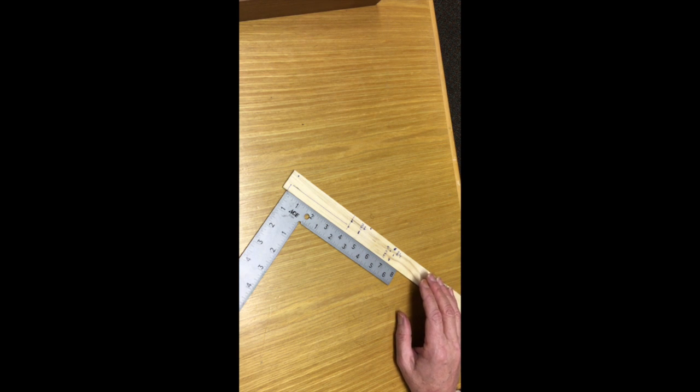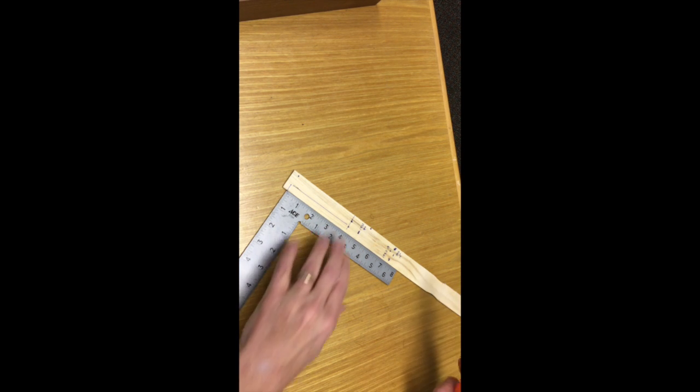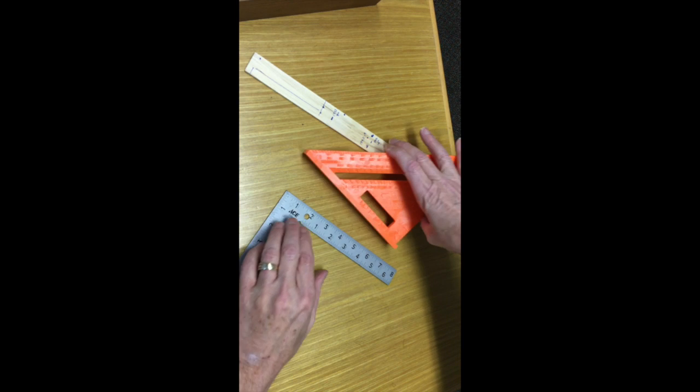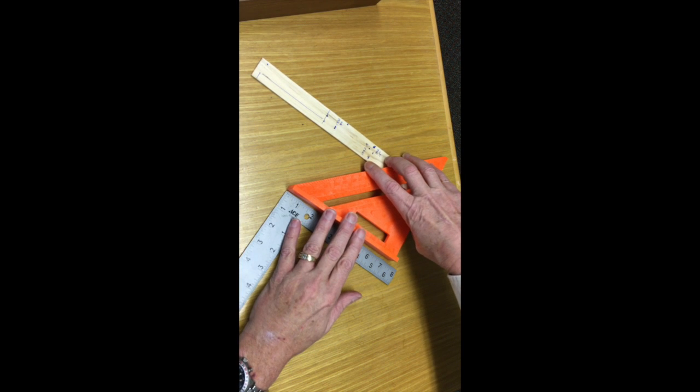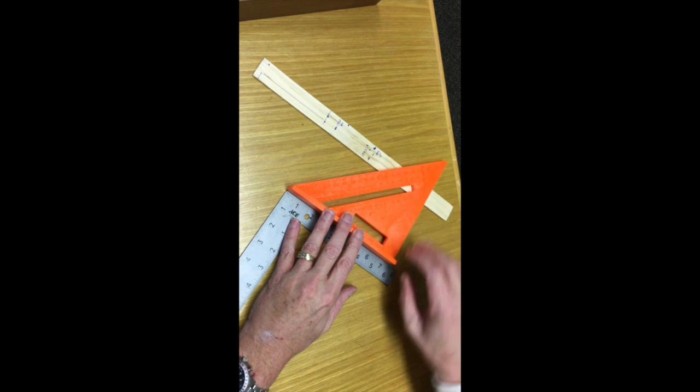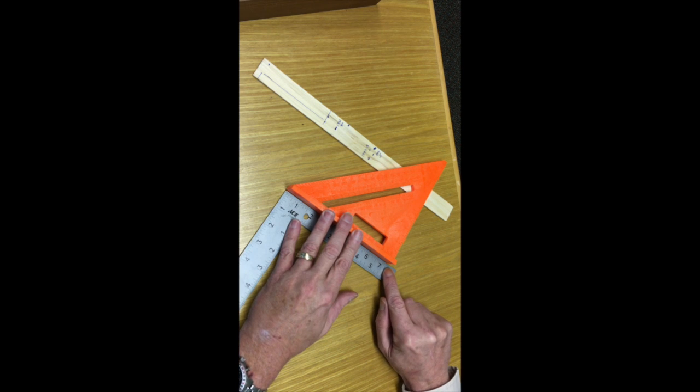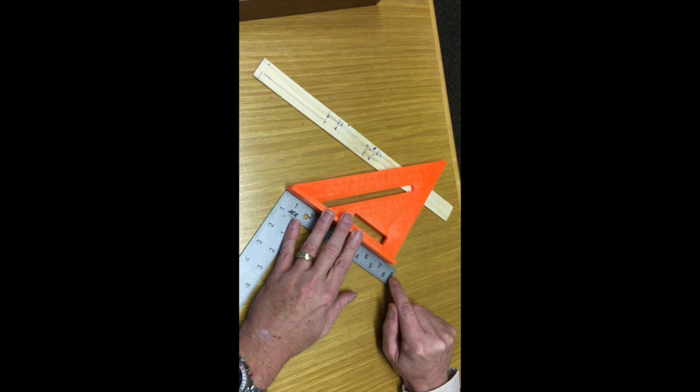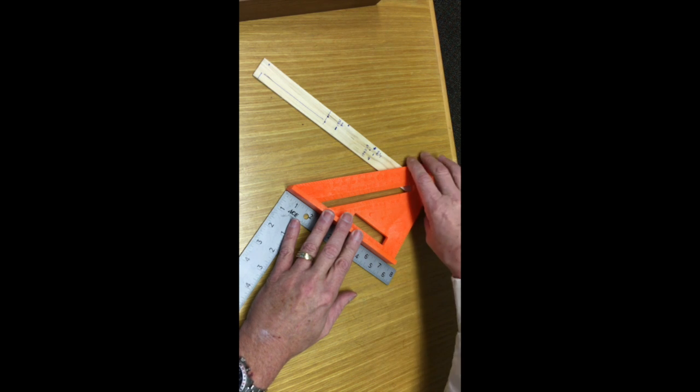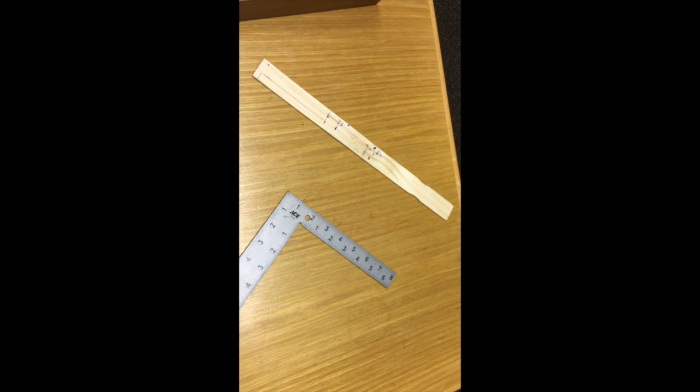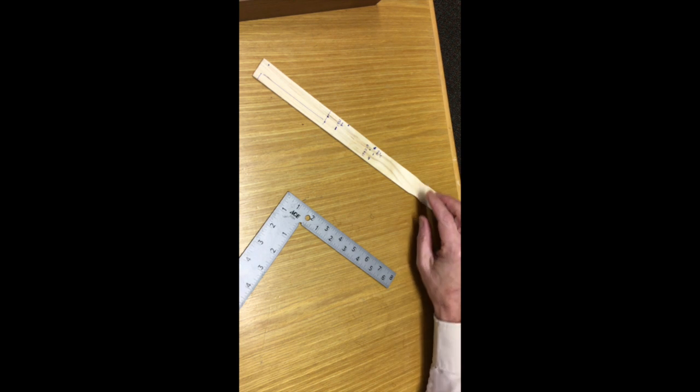Now the question becomes, how long was this? We do the same thing. And as you can see, it's slightly less than 7 and 1/4. It's actually 7 and 3/16ths. So we then convert that to decimal, and those are the numbers that we use in the triangle calculator.